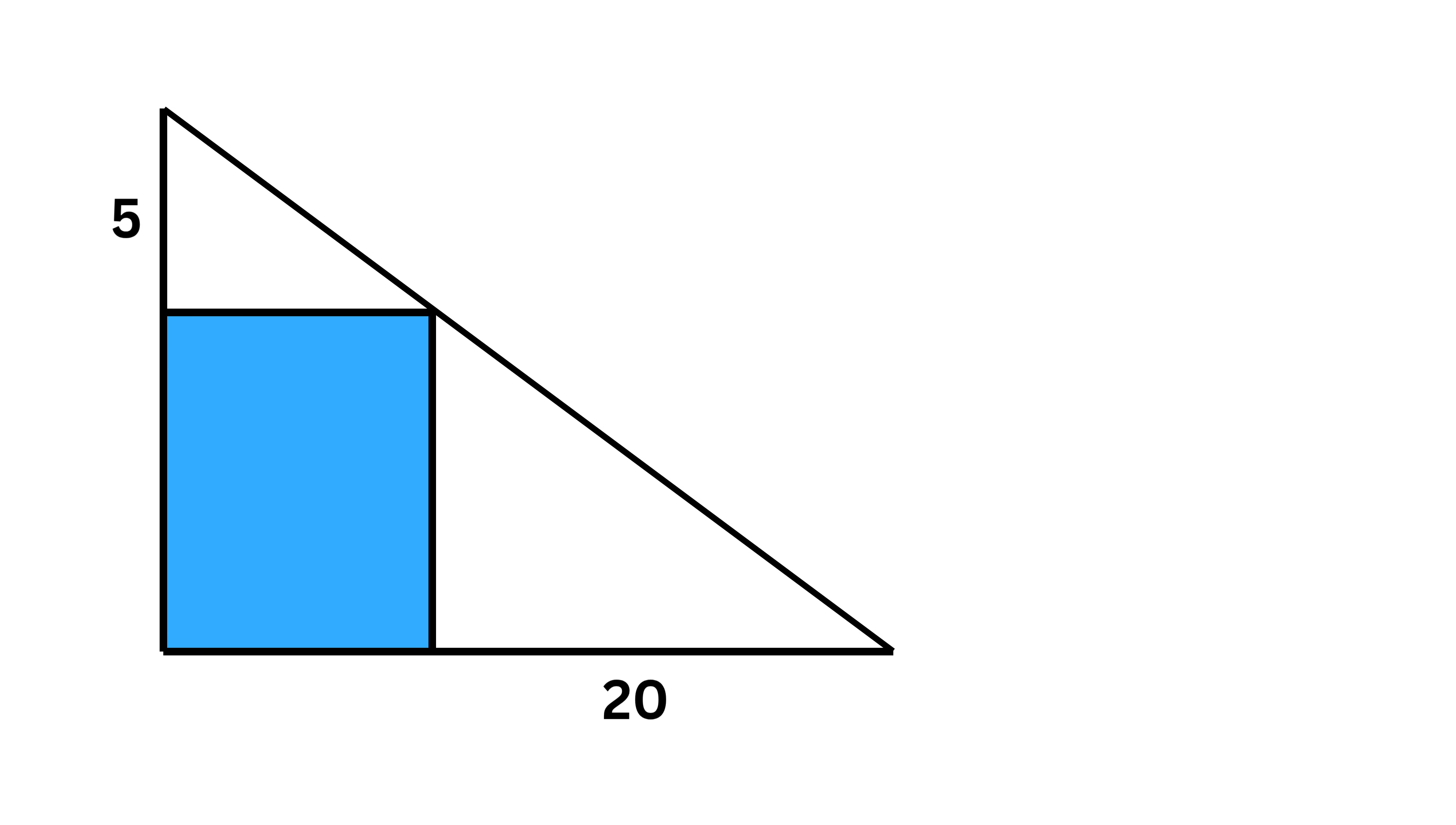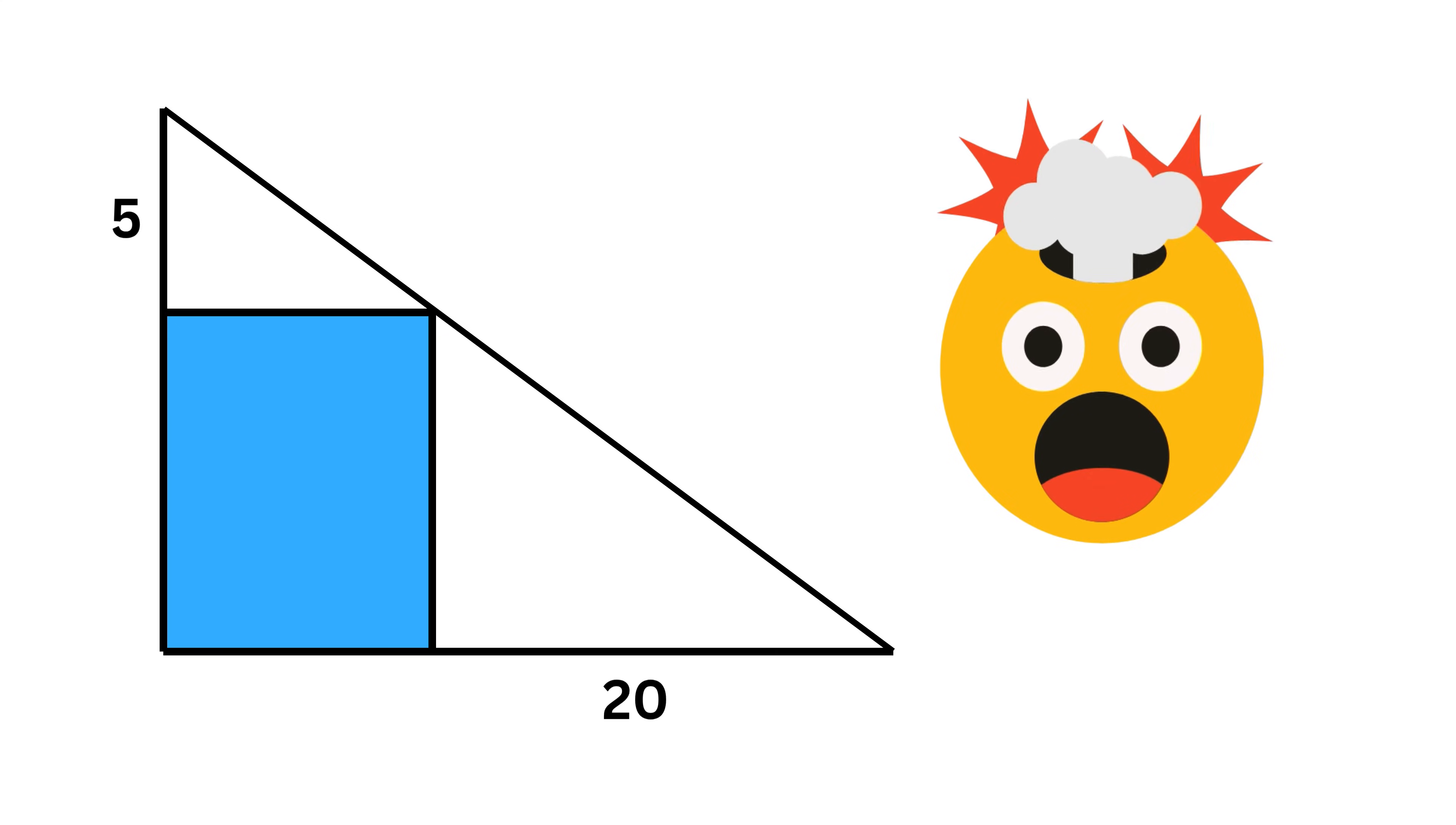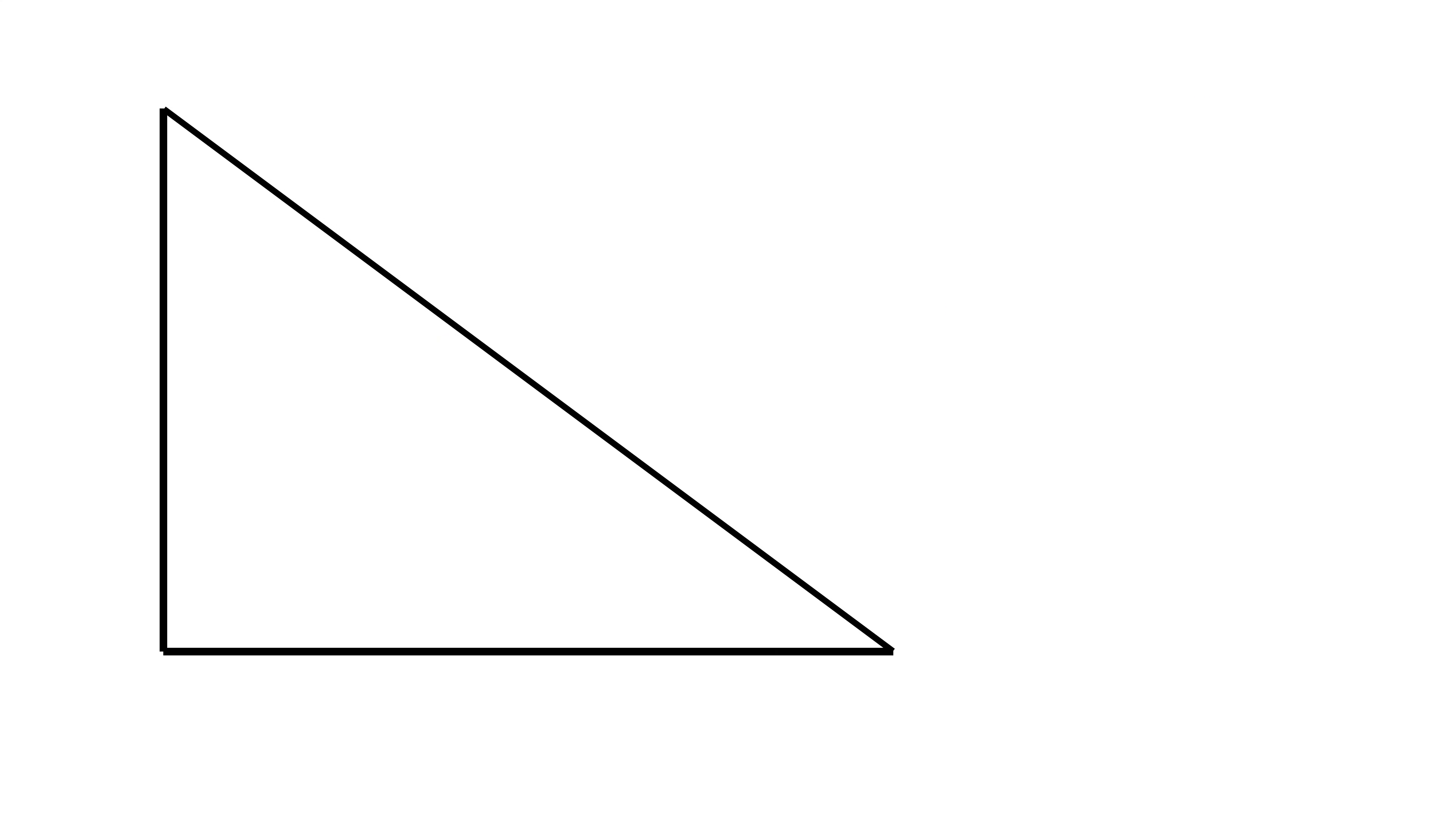This is a small fun problem and the trick with which we will solve this problem is going to blow your mind. We have a right triangle inside which we have a rectangle. It is only given that the length of this piece is 20 units and the length of this piece is equal to 5 units.